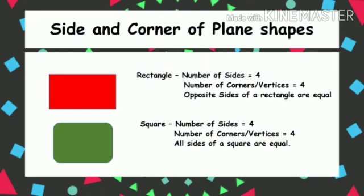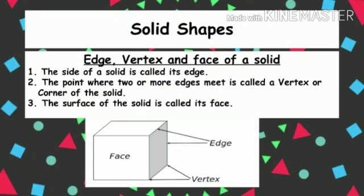Now coming to solid shapes. A solid has an edge, a vertex, and a face. As you can see in the picture, this is a square but it also has extended sides — the side of a solid is called its edge. The point where two or more edges meet is called a vertex or corner of the solid. The surface of the solid is called its face. In the next slides we are going to see some solid shapes.